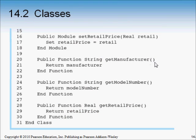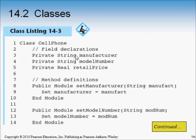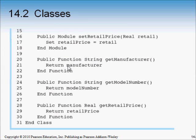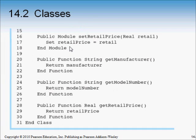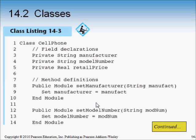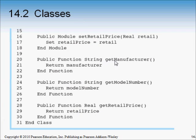The get never takes any arguments — there are no parameters because you just want to return a value from the function. The data type of the function has to match the data type of the field you're getting, and you simply return the field name. If you know the data the object needs to hold and its data types, this code practically writes itself. Each get has a return in it, and each set has an assignment operation in it.